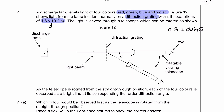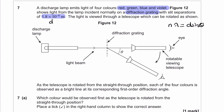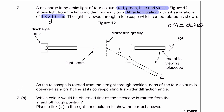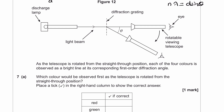The light is viewed through a telescope which can be rotated. As the telescope is rotated from the straight-through position, each of the four colors is observed as a bright line at its corresponding first-order diffraction angle. So we are considering n = 1.